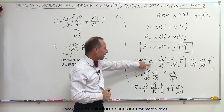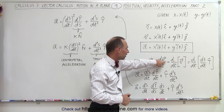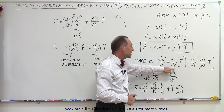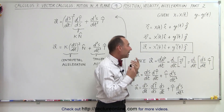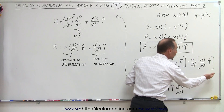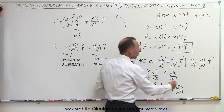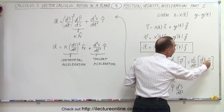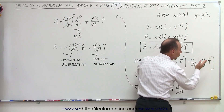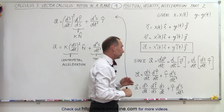First of all, we define acceleration as the derivative with respect to time of the velocity vector. So we take the d/dt of the velocity vector. And now we're going to use the velocity vector expression we found in the previous video — we take the d/dt of ds/dt, which is the speed at which we move along the curve, times the tangent unit vector.